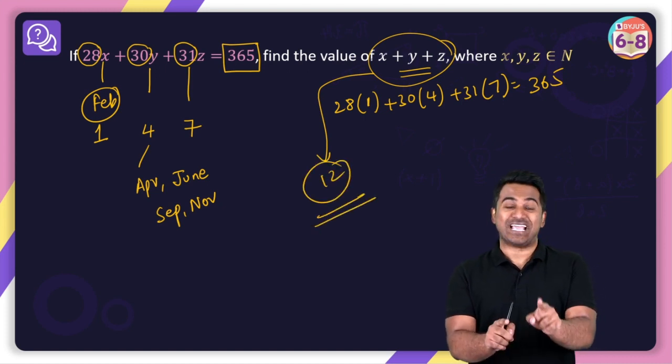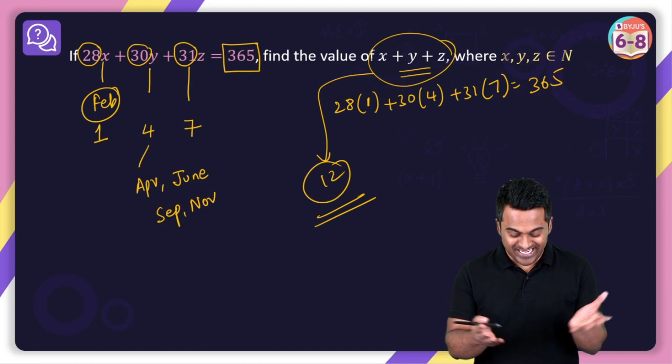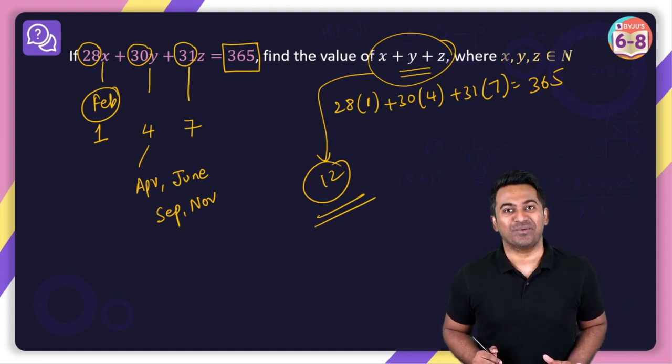So the moment you observe 28, 30, 31, 365, hey, I've seen these numbers before. You will automatically get the answer. And that is 12.